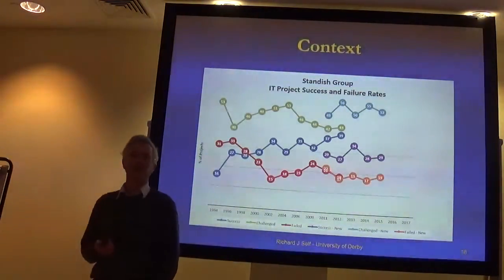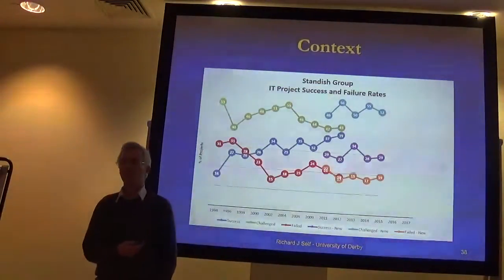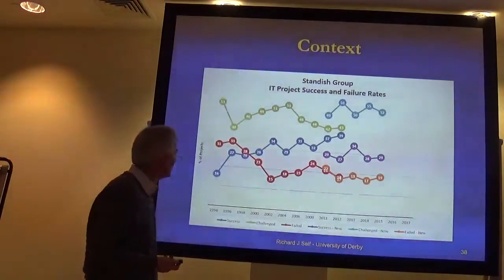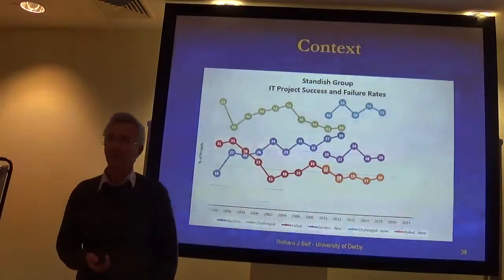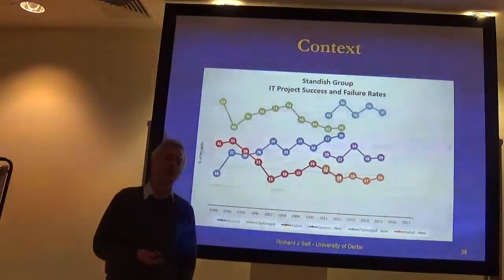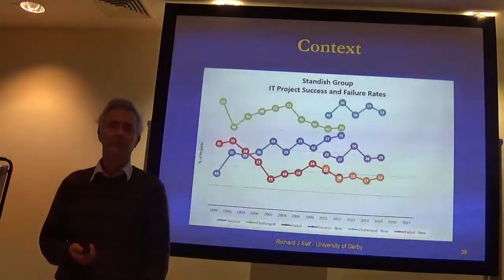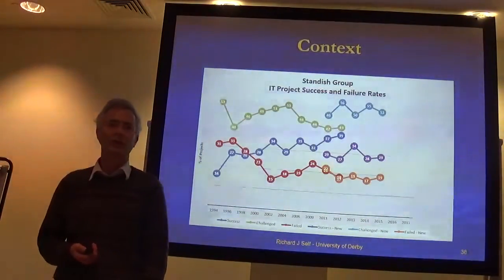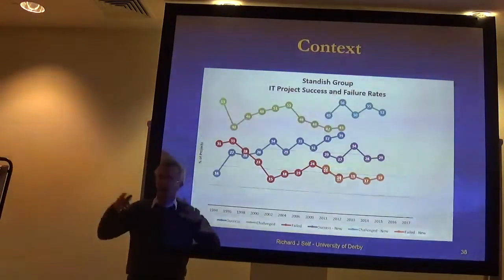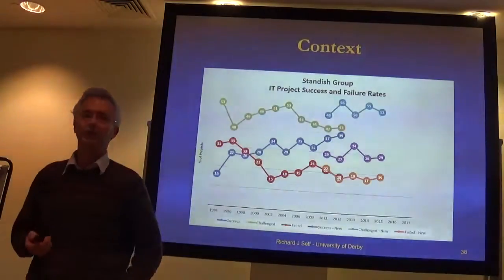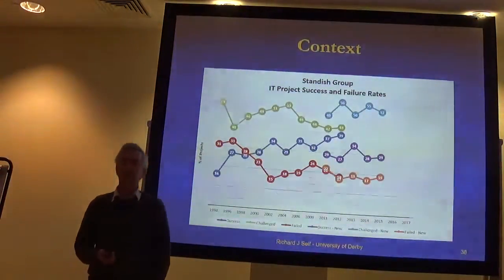We spend roughly $3 trillion a year on ICT in total — let's say $1 to $1.5 trillion is spent on developing, supporting, maintaining and new stuff. Only about 30% delivers reasonable value. Various estimates say the waste and on-costs of working around all these failures and challenges is somewhere between $2 and $6 trillion US dollars a year. World GDP is only $65 trillion. So just under 10% may be wasted because of IT.